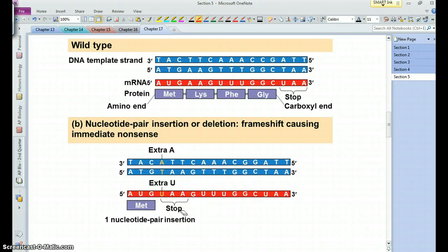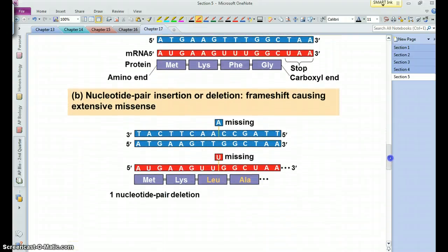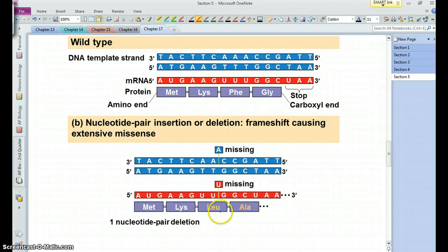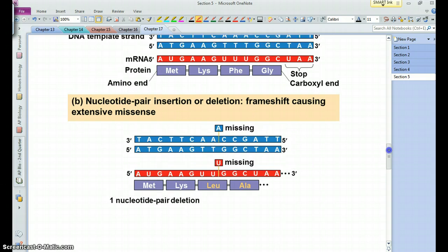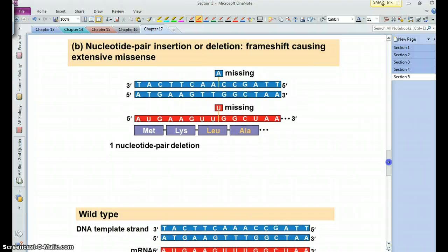That's not necessarily the case with a frame shift mutation, because here we see a frame shift in which we have a missing base, an A is missing, which means we have a missing base in our mRNA. Now it doesn't result in a nonsense mutation, but it simply changes the sequence of amino acids from where the mutation occurs on down. These insertions and deletions lead to frame shifts, and that can result in a nonsense mutation or just an altered amino acid sequence.